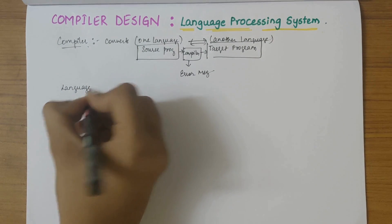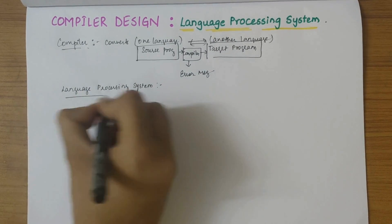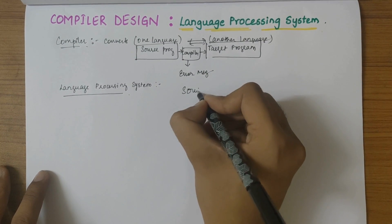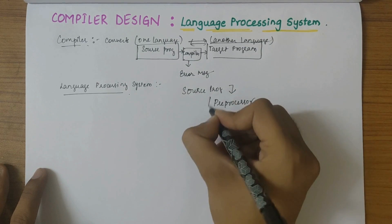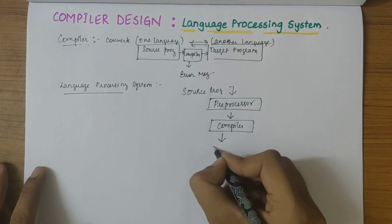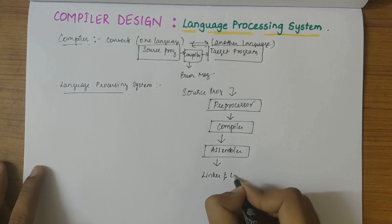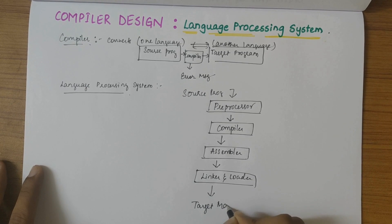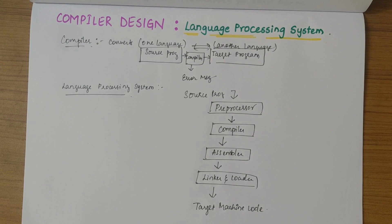Moving on to the language processing system — let's draw a diagram. The source program is fed in and goes to the preprocessor, from the preprocessor it goes to the compiler, from the compiler it goes to the assembler, and from there we have the linker and loader, which ultimately produce the target machine code.